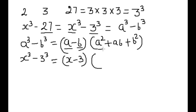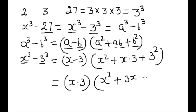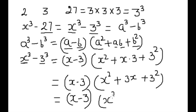Now we can say x cube minus 3 cube is equal to x minus 3, then a square is x square, plus a into b which means x into 3, plus b square which means 3 square. So we can write this as x minus 3, times x square plus 3x plus 9. This is the complete process of this polynomial function.